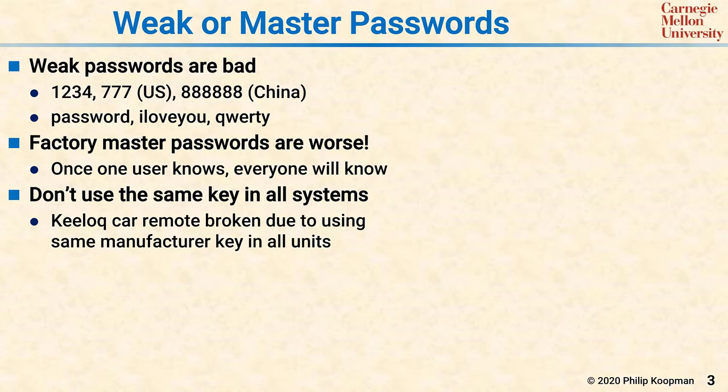Another common issue is using the same cryptographic key in all systems. For example, the Keylock car remote was broken due to using the same manufacturer key in all units for the same car company. There were some other random bits on top of the manufacturer key, but once you had the manufacturer key, it was pretty easy to brute force your way in the rest of the way.